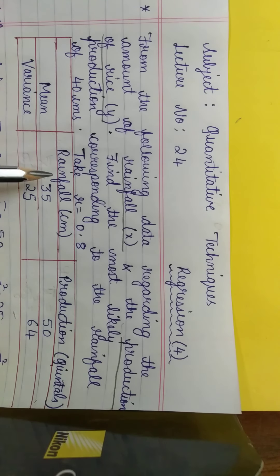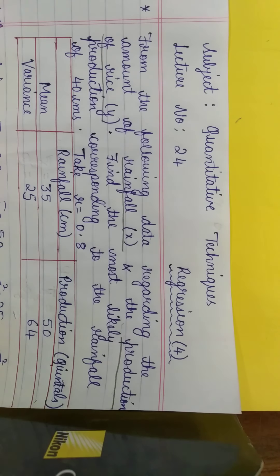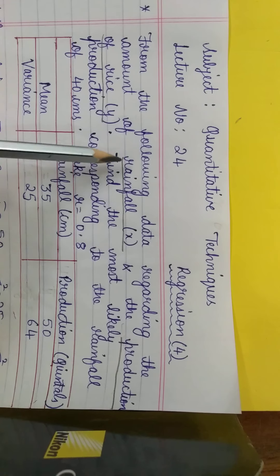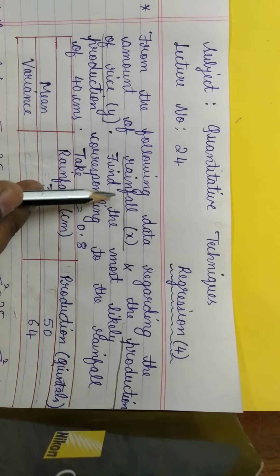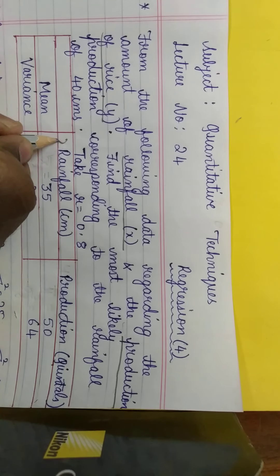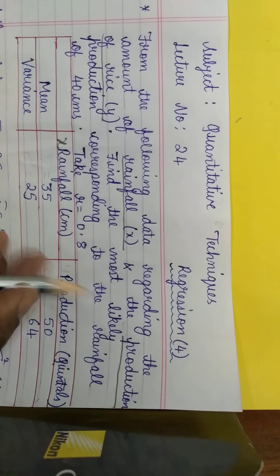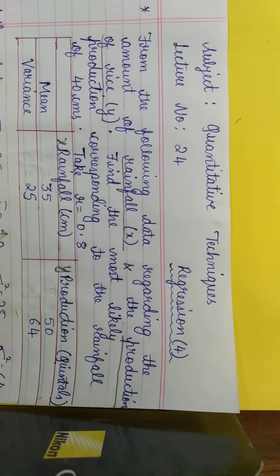Data has been given: rainfall in centimeters, production in quintals, mean and variance. So the values are: mean rainfall x̄ = 35, mean production ȳ = 50, variance of x (σx²) = 25, and variance of y (σy²) = 64. Rainfall is taken as x and production of rice as y.